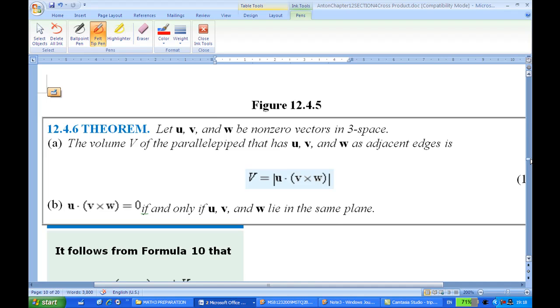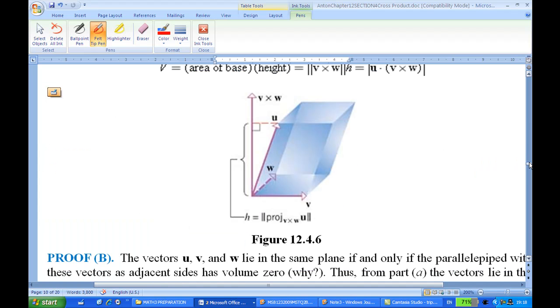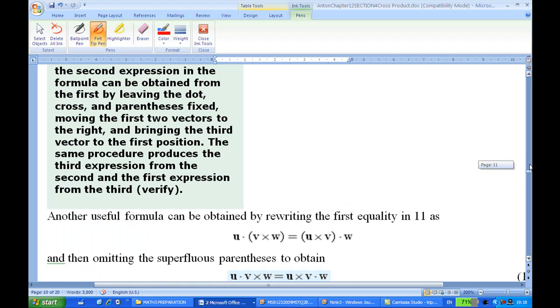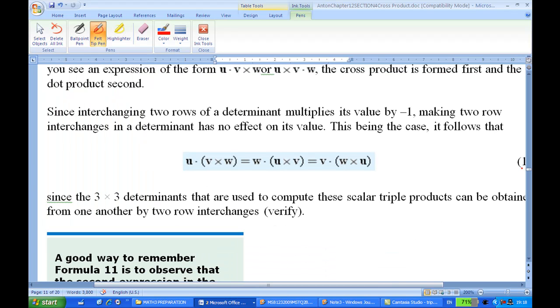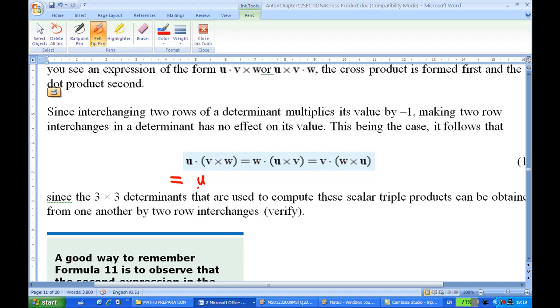Now, there are some other properties which you may need to know. For example, algebraically, u dot v cross w is the same as w dot v cross u, which means that this is actually the same as u cross v dot w.